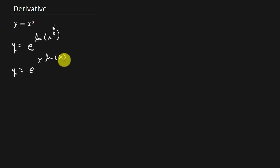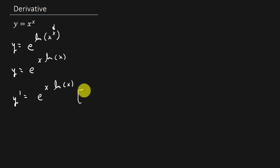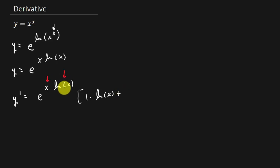Now let's take the derivative. We know how to take the derivative of e raised to a power. So y prime is equal to e raised to the x times natural log x, times the derivative of the exponent. That derivative involves the product rule — the derivative of the first function times the second, plus the derivative of the second function times the first. The derivative of natural log x is 1 over x.